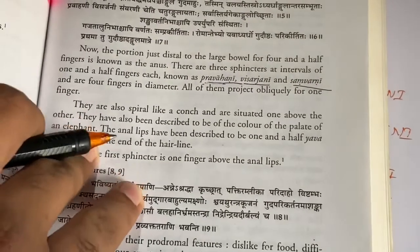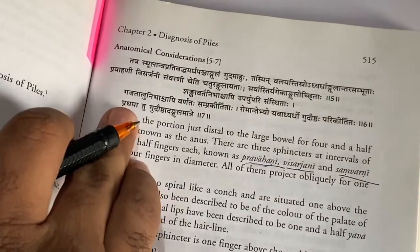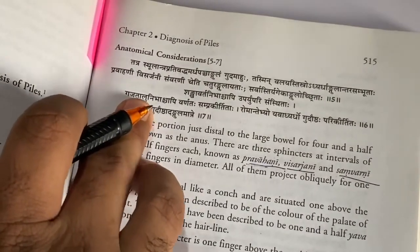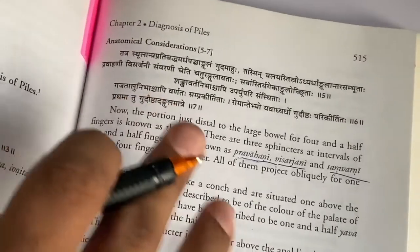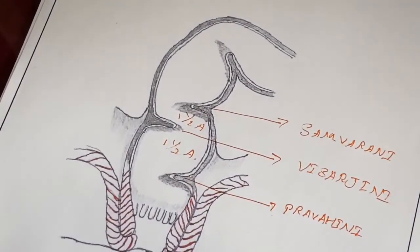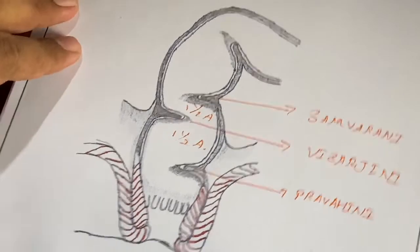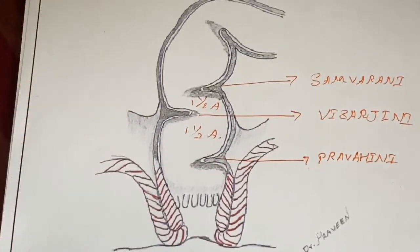He says these are having the shape of gaja talu—gaja means elephant, talu means palate. As the palate of the elephant looks, in the same way these are having the shape.